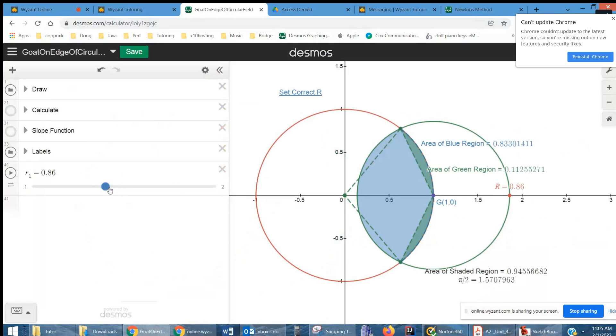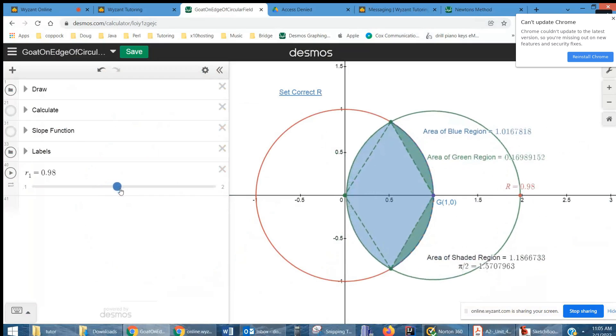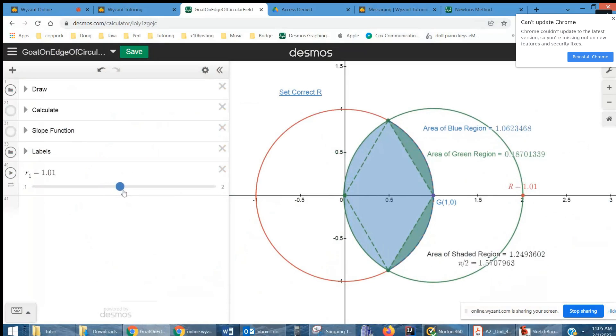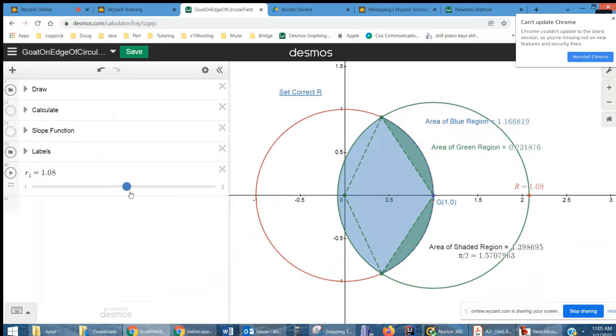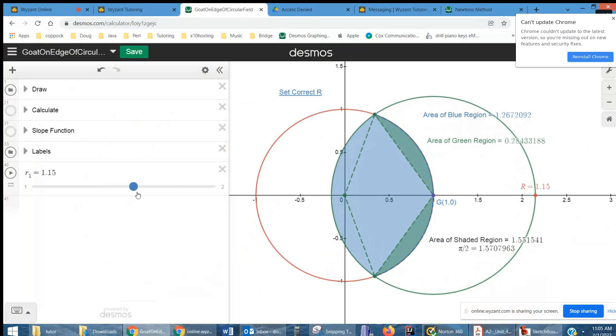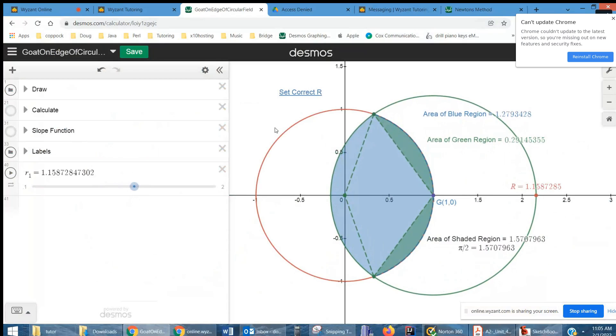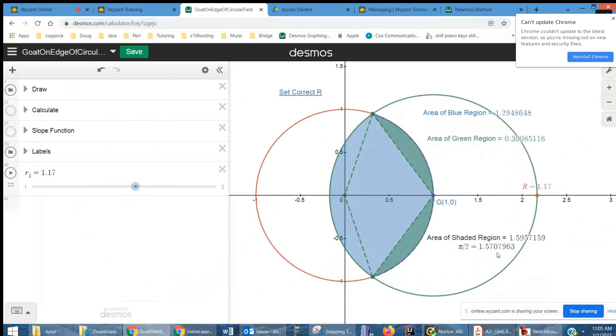If I increase r to 1, it still doesn't quite get there. So that means that r has to be greater than 1, and eventually we'll get there. It turns out that the correct r is this number right here, 1.1587285. You can see how close that gets us to having the shaded region equal to π over 2. Of course, we want r to be greater than or equal to that, so that the area of the shaded region is greater than half the area of the field.